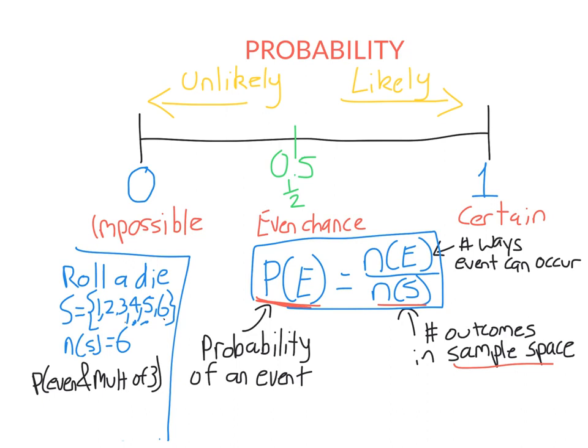Now let's look at the probability I roll a number that's even AND a multiple of 3. 'And' means it has to be both — it has to be even, and it also has to be a multiple of 3. There's only one way that can occur: that's 6. Six is the only number in the sample space that is both even and a multiple of 3. So that's 1 way out of 6 outcomes in total.